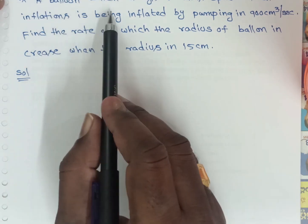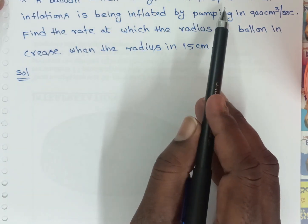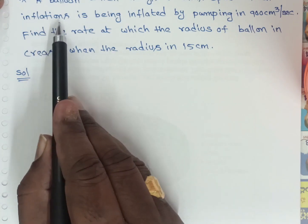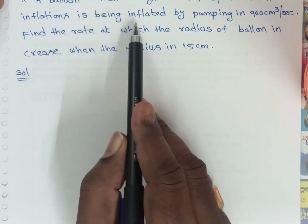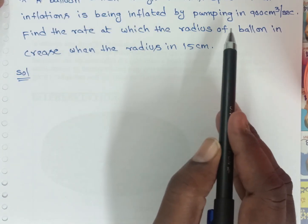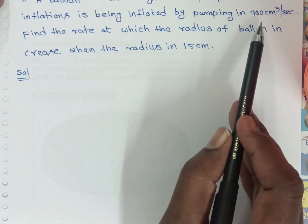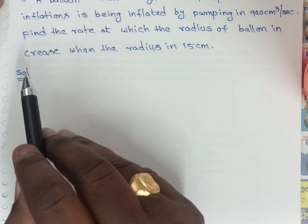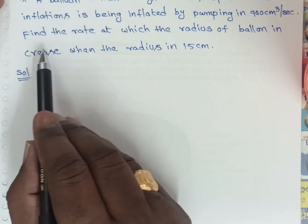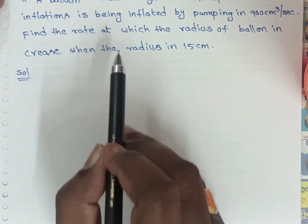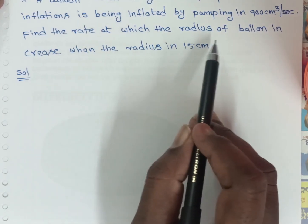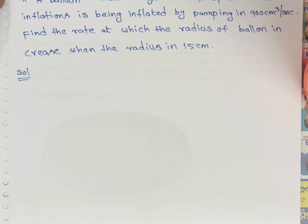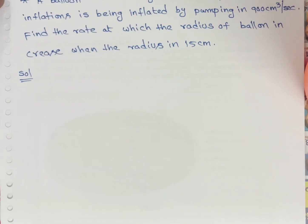A balloon which always remains spherical is being inflated by pumping 900 cubic centimeters of air per second. Find the rate at which the radius of the balloon increases when the radius is 15 centimeters.